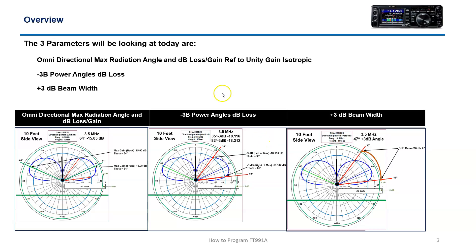The pattern things we're going to look at today are: number one, the max radiation angle and the loss and gain at that angle referenced to an isotropic. The second thing is lobe intersection points at the minus 3 dB point from the maximum advertised dB gain or loss — so we go 3 dB down and see where the lobe intersects. The last thing is plus 3 dB beam width, which gives us the angle or degree of the beam path at plus 3 dB.